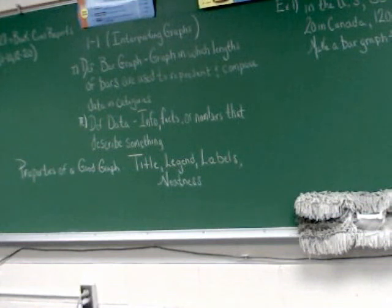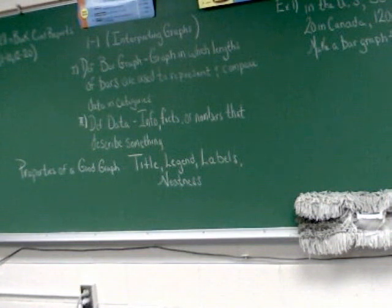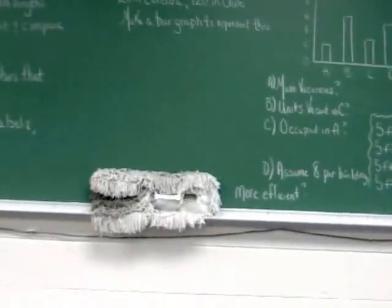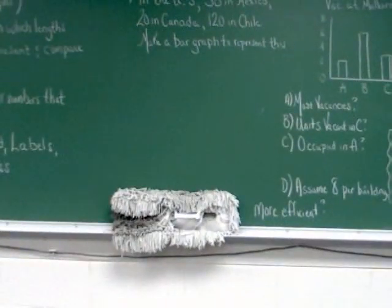Let's take a look at example one. There are 170 active volcanoes in the U.S., 30 in Mexico, 20 in Canada, and 120 in Chile. Make a bar graph to represent this data.